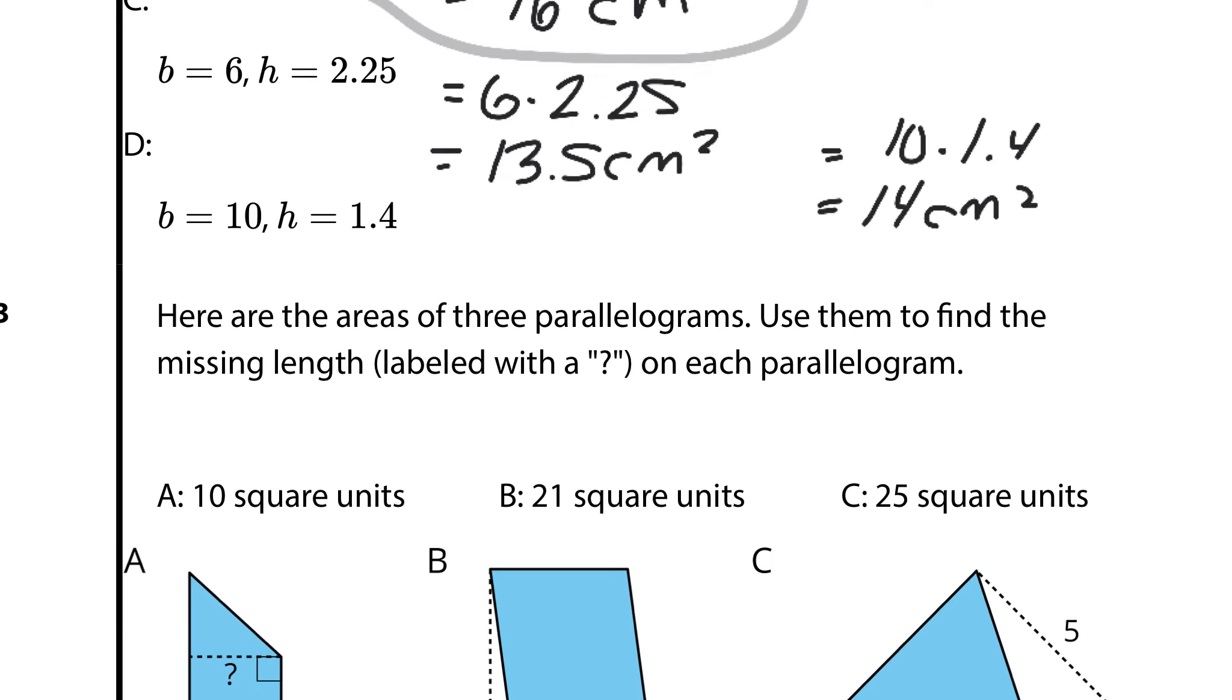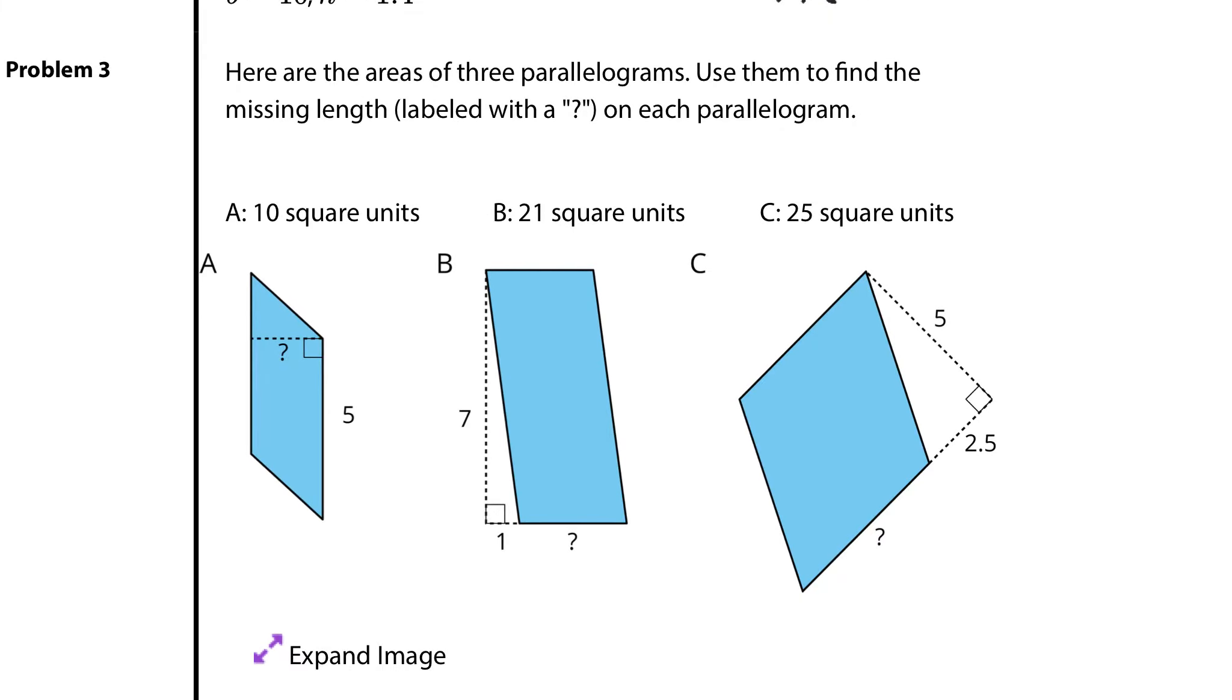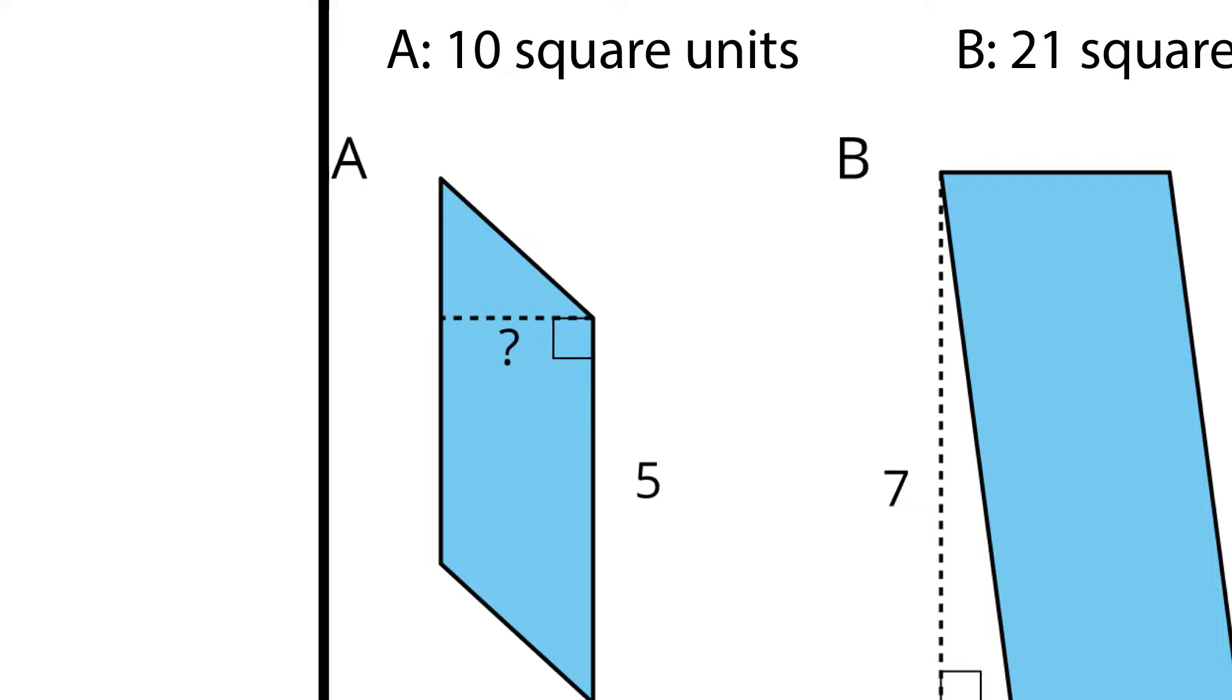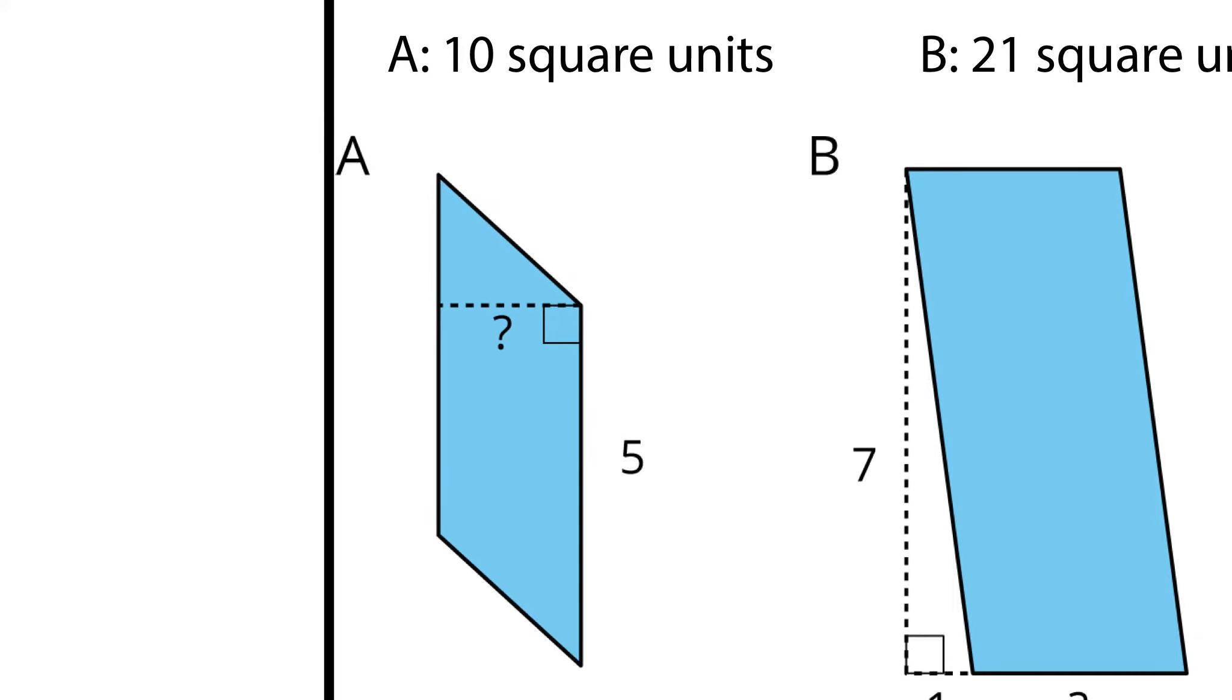Next, here are the areas of three parallelograms. Use them to find the missing length labeled with a question mark on each parallelogram. Let's zoom in on A. Our area is 10 square units. And so remember, area of a parallelogram is equal to the base times the height. So we're told the area is 10, the base is 5, and we do not know the height. Well let me ask you. 5 times what is 10? 5 times 2 is 10. So that missing is 2 units.